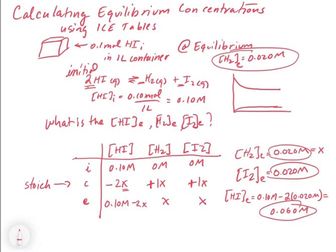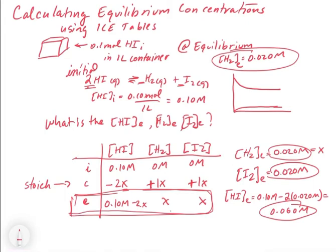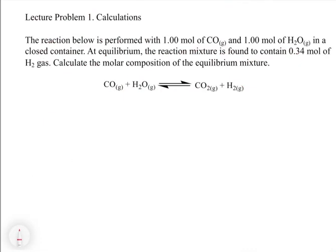We can use the ICE table to set these up. Once you have the equilibrium row, depending on whether the problem gives you an equilibrium concentration, you can do many things — solve for x, or use a given equilibrium concentration to calculate all the others. Now let's look at another example. The reaction below is performed with 1 mole of CO and 1 mole of H2O in a closed container. We don't know the volume, but that doesn't matter because you can do this with moles or with molarity since these are closed containers with the same volume.